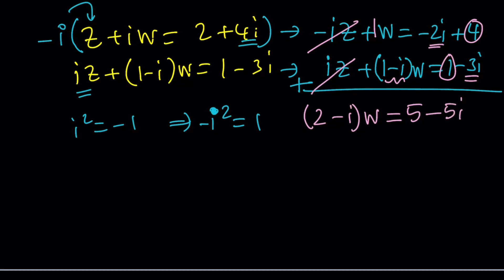So from here, can we find W? Of course, by using division. How do you divide? First of all, let's divide both sides by 2 minus I. And then we're going to cancel this out. So W is going to equal 5 minus 5I divided by 2 minus I.